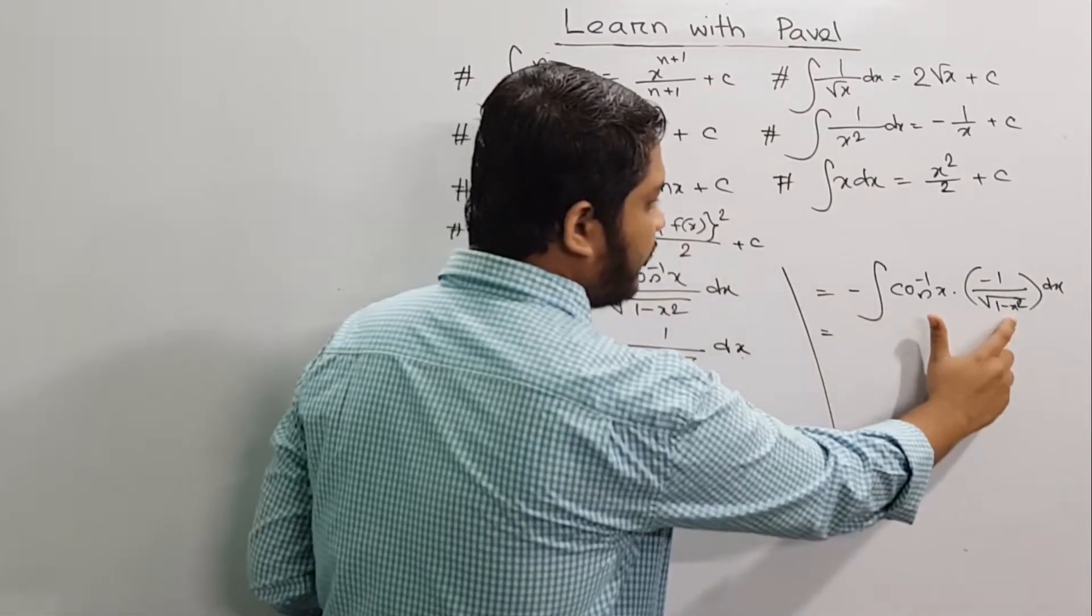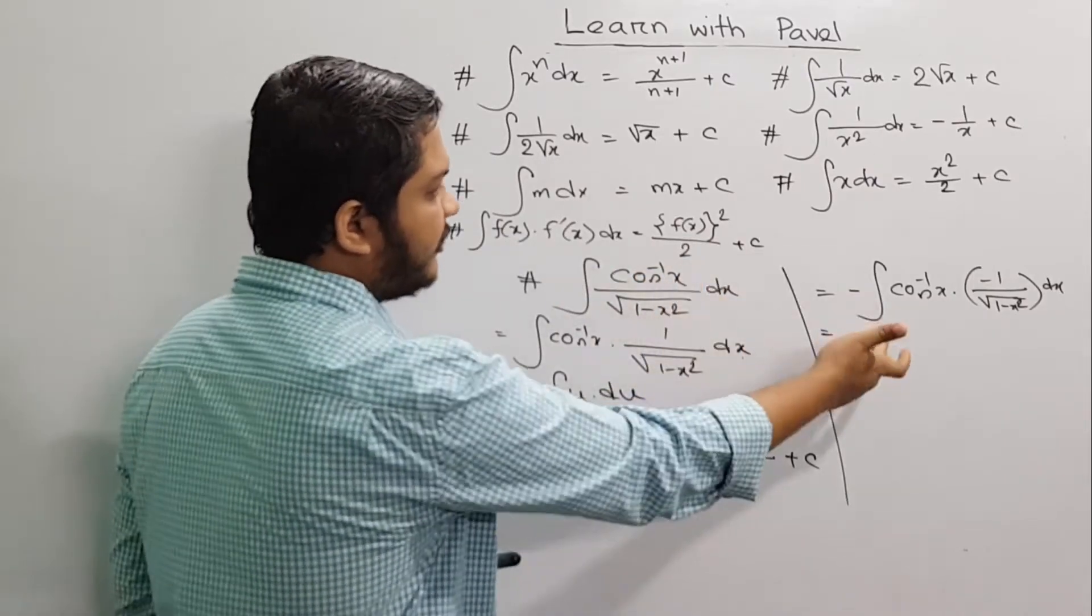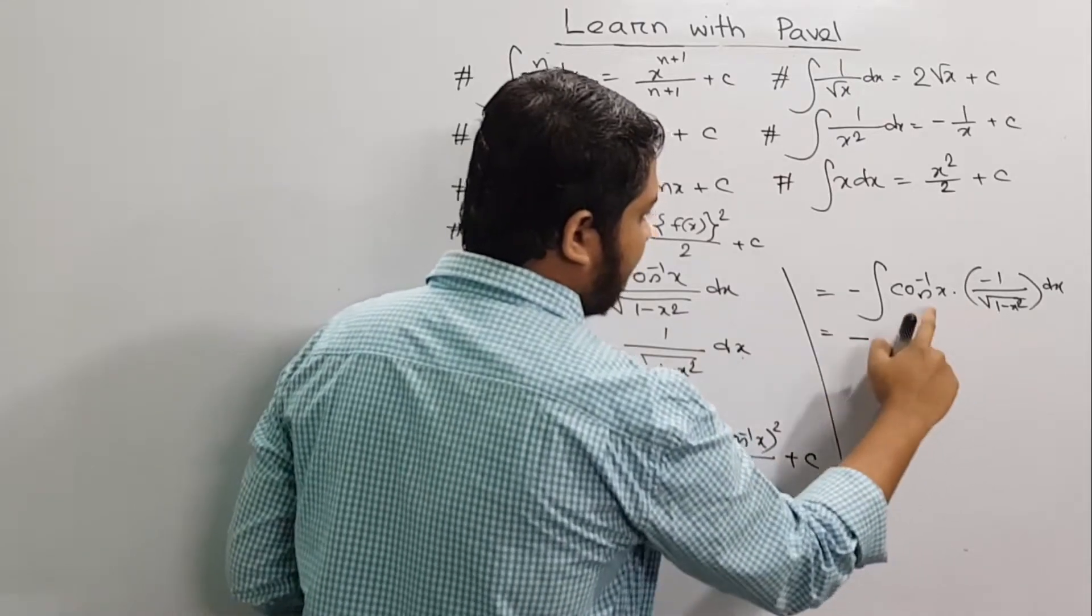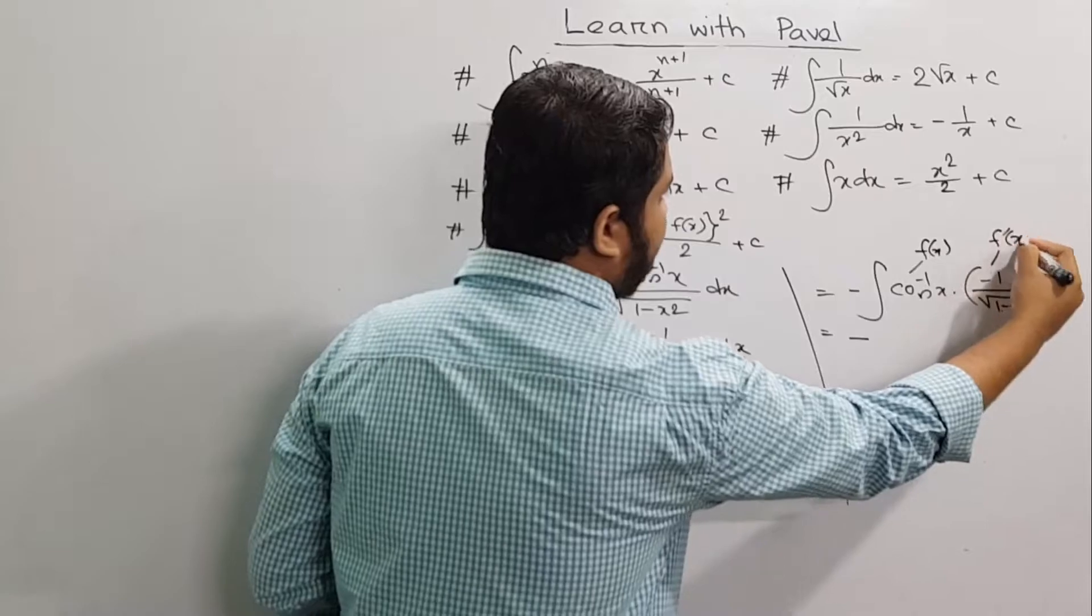So we have f of x and f prime of x. In this concept, we will get f of x whole square by 2. Minus and minus will be plus. The result is f prime of x.